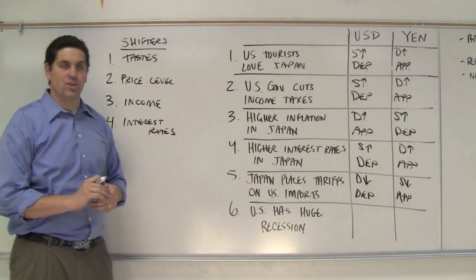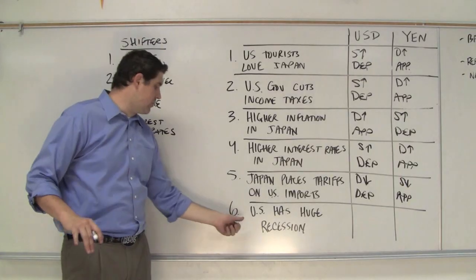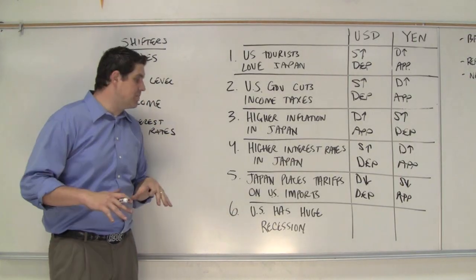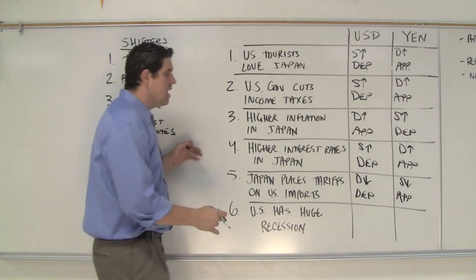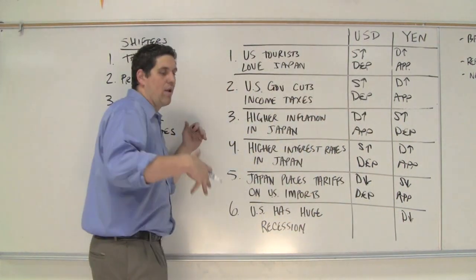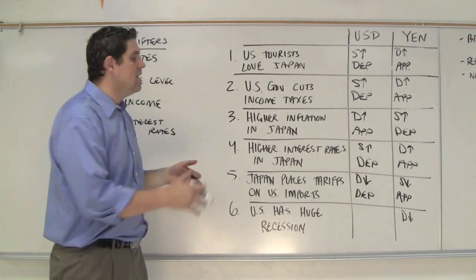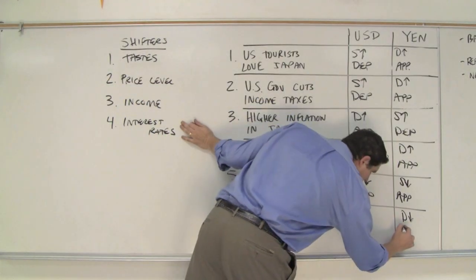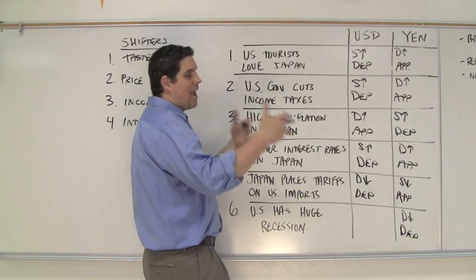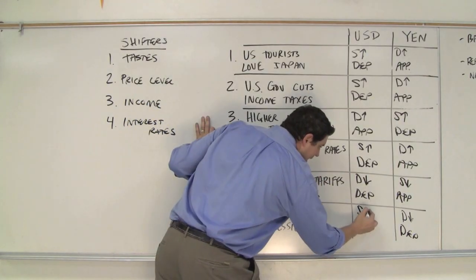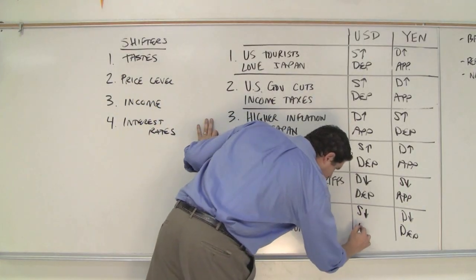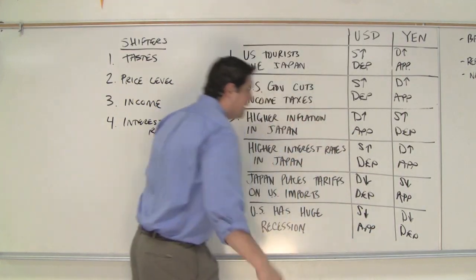Last one: the U.S. has a huge recession. The United States has a recession — I'm trying to connect that to income. Our incomes are down. If our incomes are down, we're not buying things from other countries, and so the demand for yen would fall. We're poor, we don't have money, we can't buy things from Japan — demand would fall. That would cause the yen to depreciate. And if we're not demanding theirs, we're supplying less of the United States dollars to the foreign exchange, which would cause the dollar to appreciate.